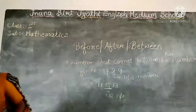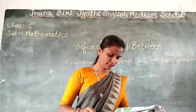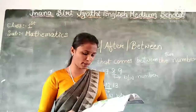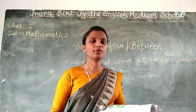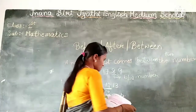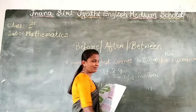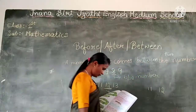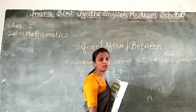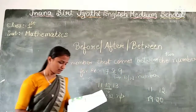Children, open your book to page number 67. Write the number that comes just after the number given in each box. After 7, which number comes? 12. After 19, which number comes? 20. 20 is the after number. Right?